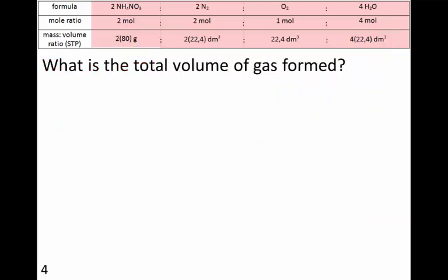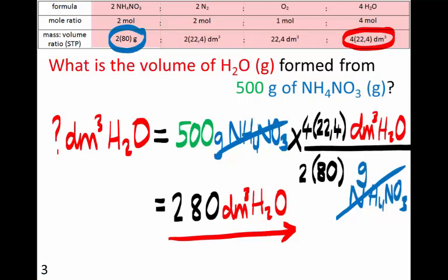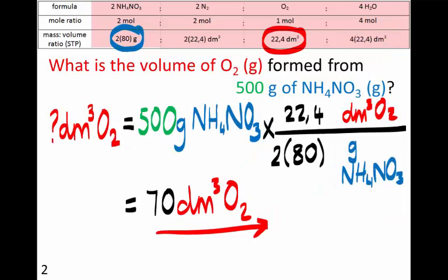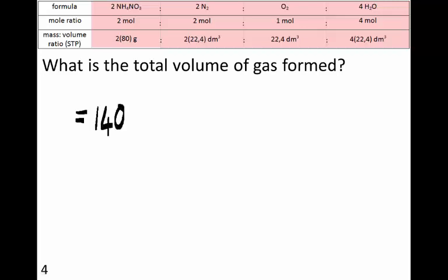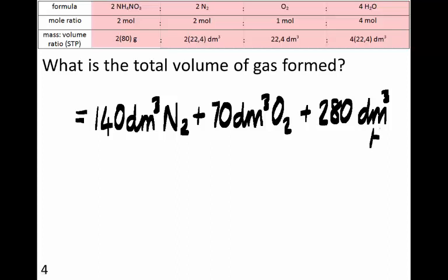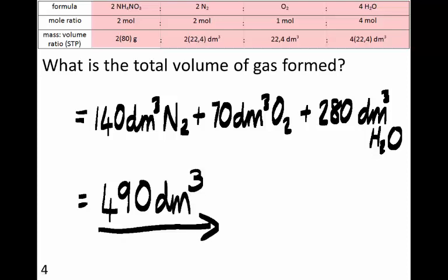For all of these questions we were asked about the volume of gas formed when 500 grams of ammonium nitrate decomposes. When 500 grams decomposes: 280 dm³ of water vapor is formed, 70 dm³ of oxygen gas is formed, and 140 dm³ of nitrogen is formed. To find the total volume of gas, we add those three values: 140 + 70 + 280 = 490 dm³. A dm³ is the same as a liter, so that's 490 liters.